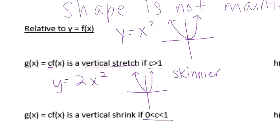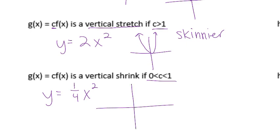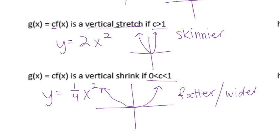Now let's look at if c is between 0 and 1. So let's say y equals one-fourth x squared — that's where you have a fraction or decimal smaller than 1 but bigger than 0. We're not thinking about negatives because a negative will do a reflection. This one is going to be a vertical shrink. Think about someone tall who gets squeezed down, or a can of Coke you step on — it gets smaller but a little fatter, gets wider.